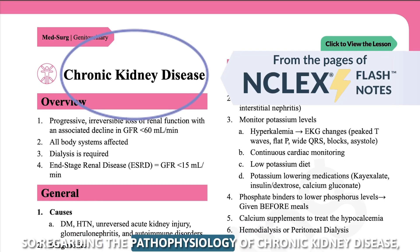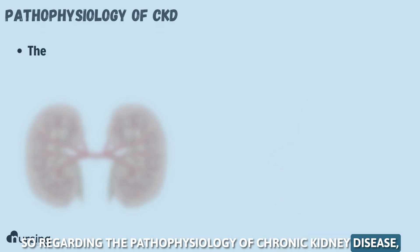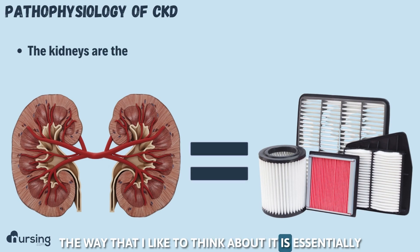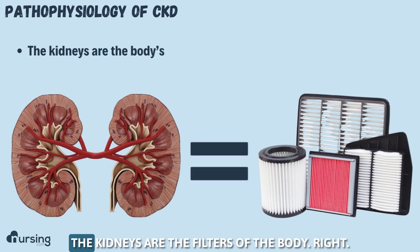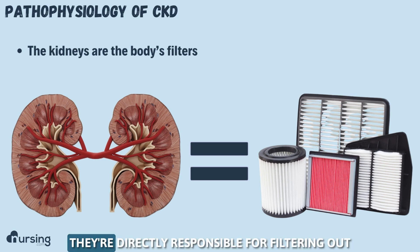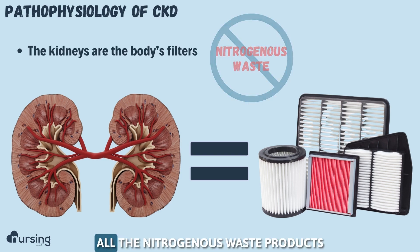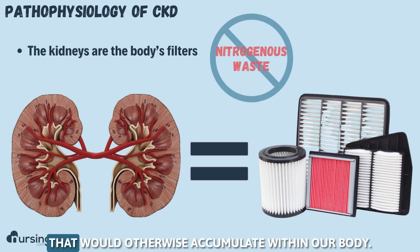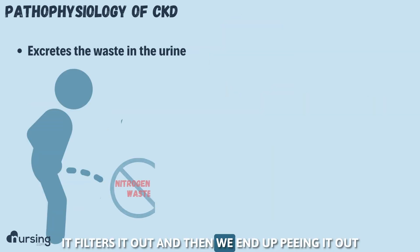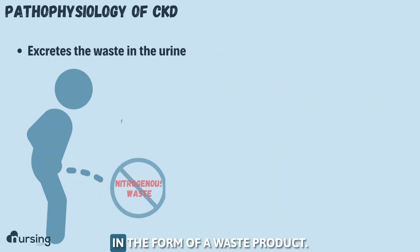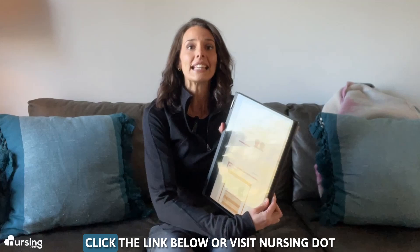Regarding the pathophysiology of chronic kidney disease, the way that I like to think about it is essentially the kidneys are the filters of the body. They're directly responsible for filtering out all the nitrogenous waste products that would otherwise accumulate within our body. It filters it out, and then we end up peeing it out in the form of a waste product.